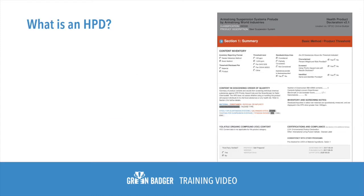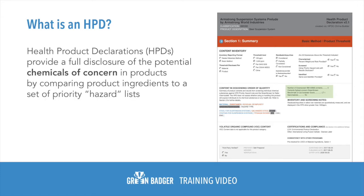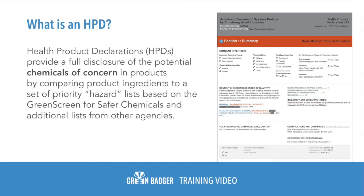What the heck is a health product declaration, or HPD, you might ask? Health product declarations, or HPDs, provide a full disclosure of the potential chemicals of concern in products by comparing product ingredients to a set of priority hazard lists based on the GreenScreen for Safer Chemicals and additional lists from other government agencies.